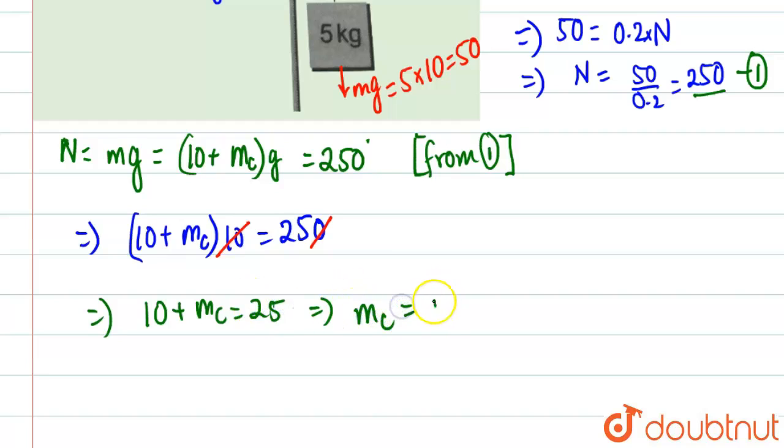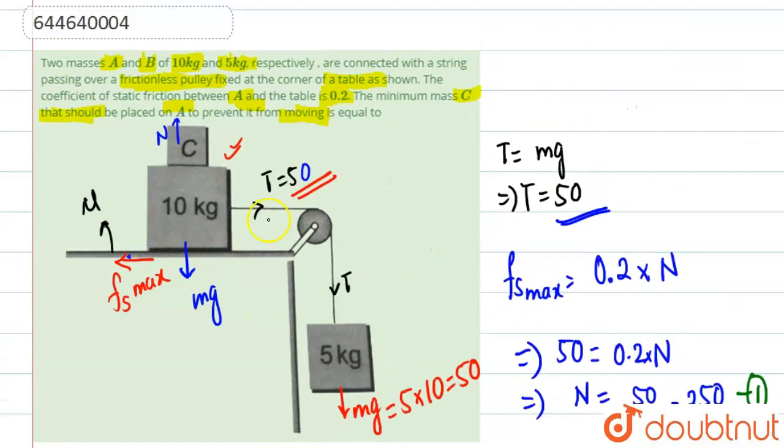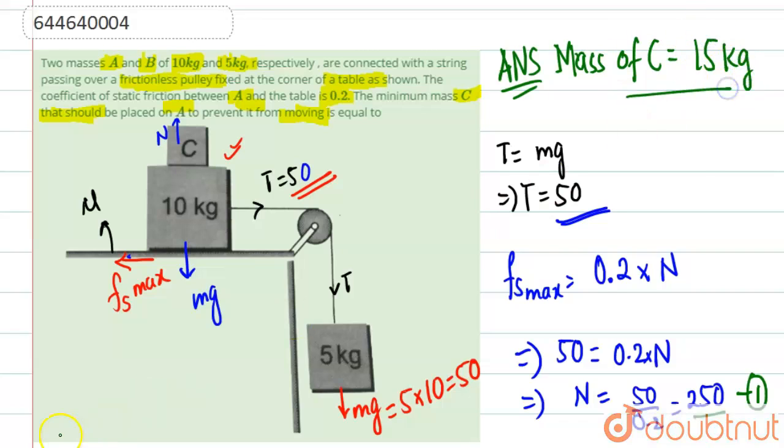This gives us Mc equals 15 kilograms. The minimum mass of C must be 15 kilograms so that this system remains in equilibrium. Our answer is mass of C equals 15 kilograms.